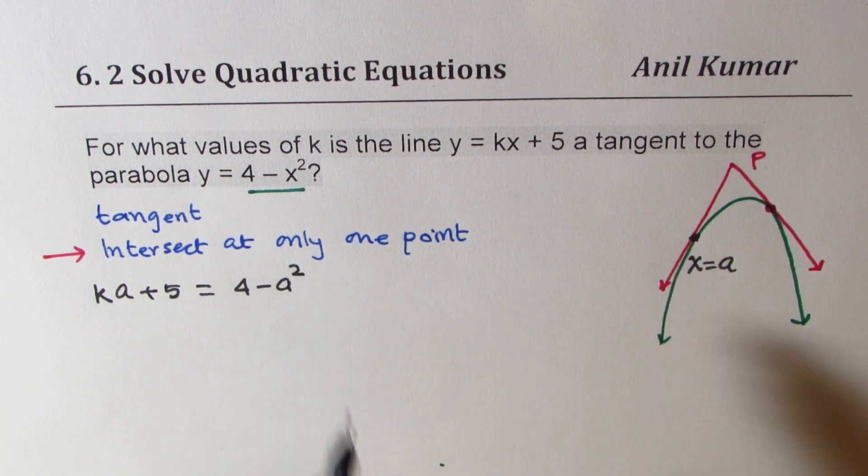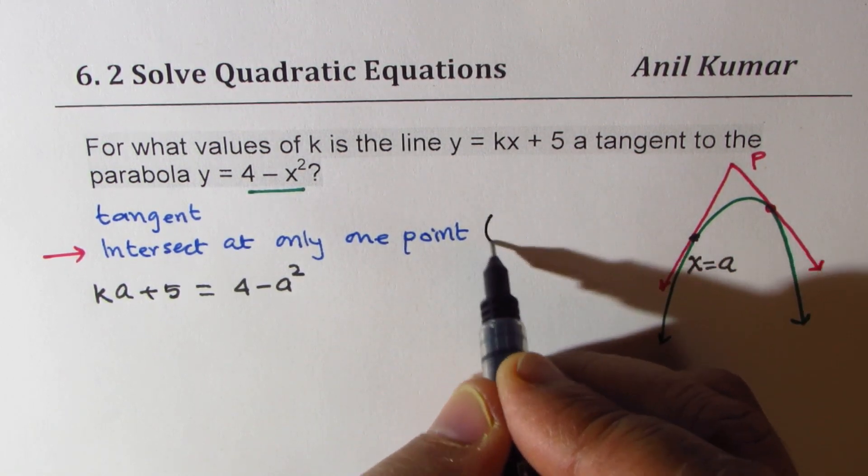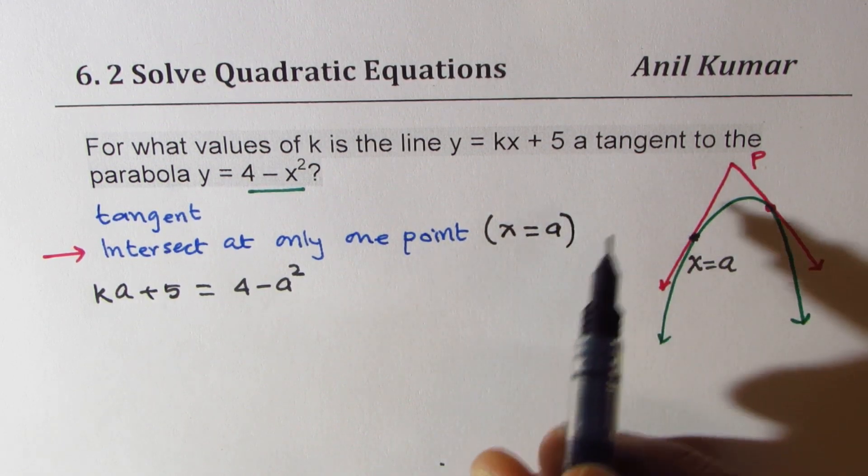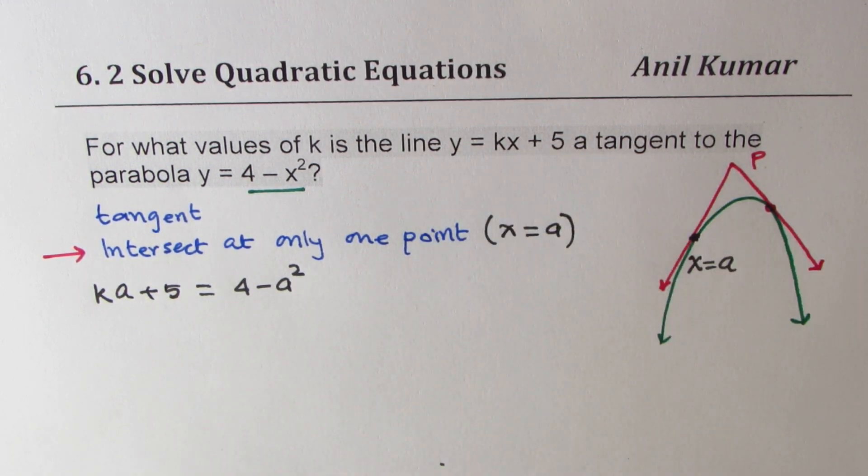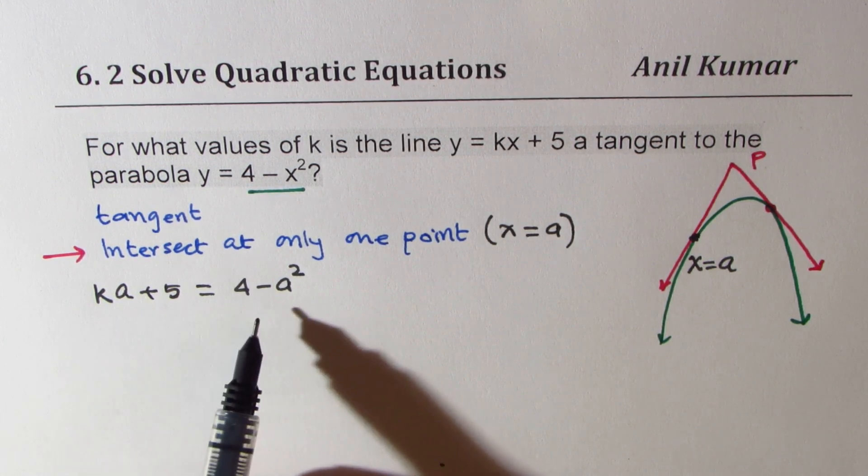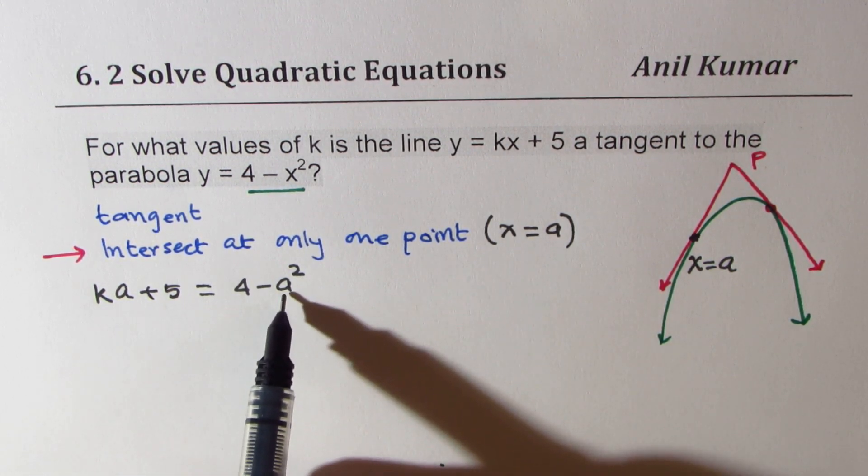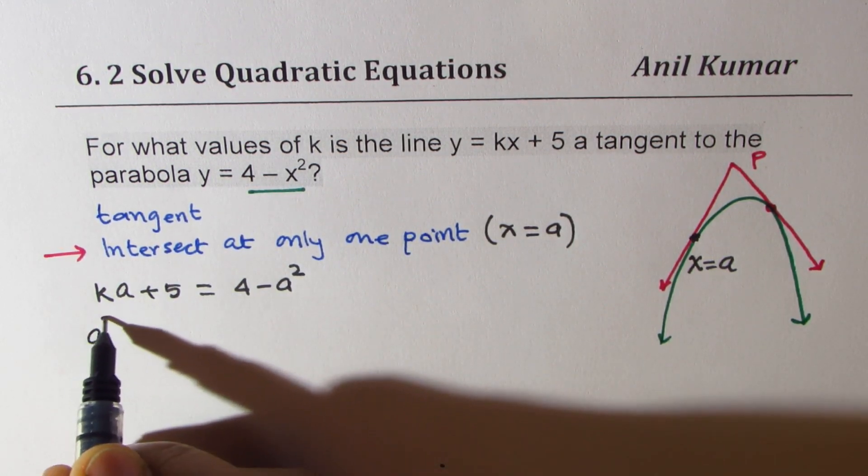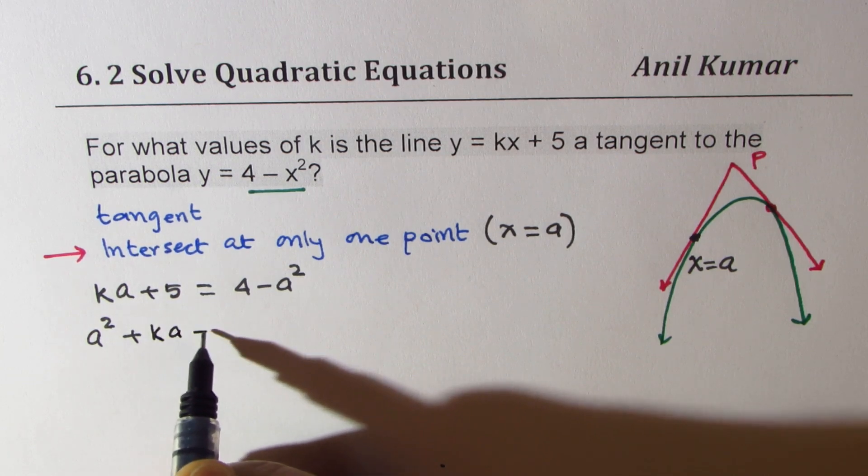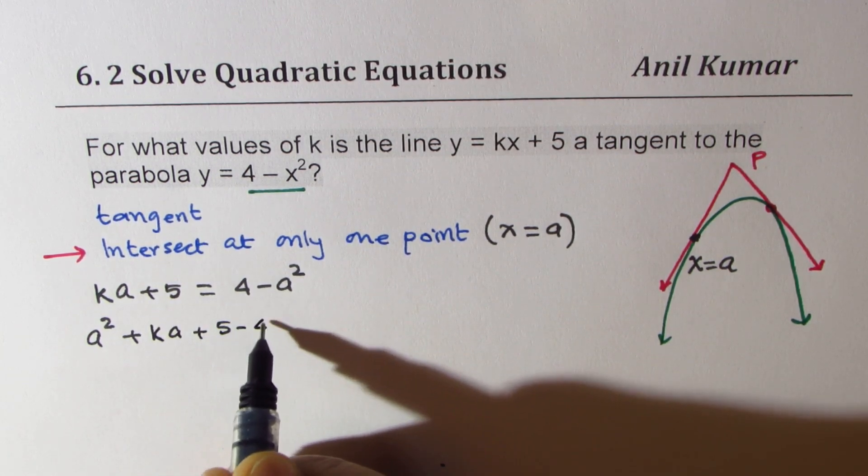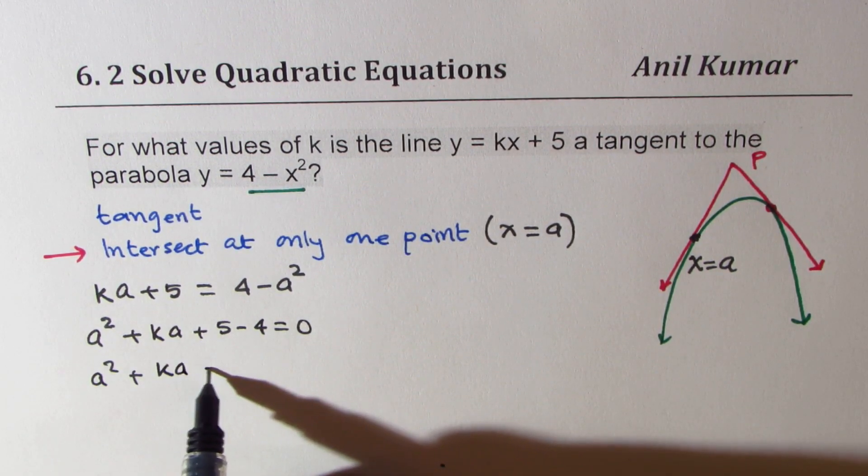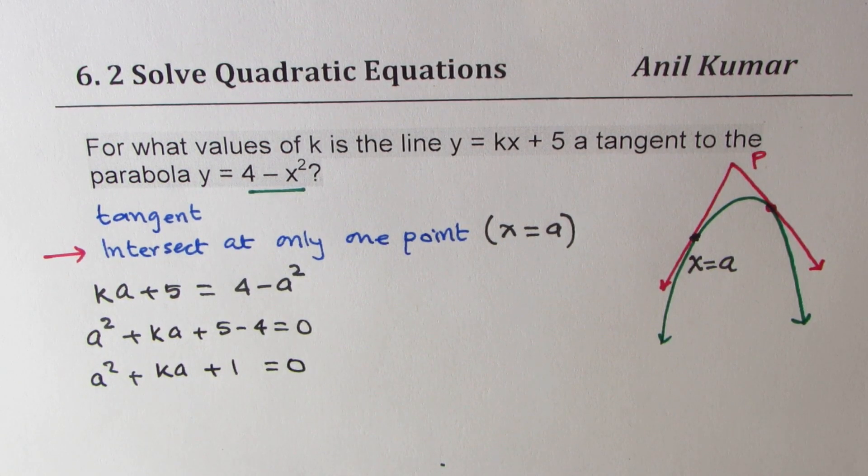Since they intersect at a point, and let's say this point for us is x value of a, once we know that, we can always place it and find y value. So what we get here is a quadratic equation. We can bring down all the terms on the left side, making this a² + ka + 5 - 4 = 0, which is a² + ka + 1 = 0. So that is the quadratic equation we have.